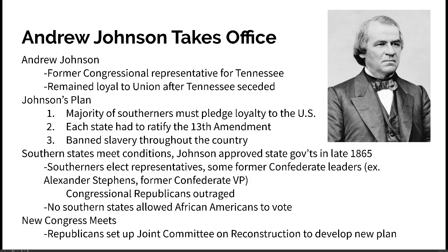Johnson's plan required the majority of Southerners to pledge loyalty to the U.S., each state to ratify the 13th Amendment, and banned slavery throughout the country. Many Southern states met these conditions, and Johnson approved their state governments in late 1865. Southerners then started electing representatives to Congress — some of whom were former Confederate leaders, like Alexander Stephens, the former Confederate vice president. Republicans in Congress were outraged, not wanting Confederate leaders to have a say in the new government.